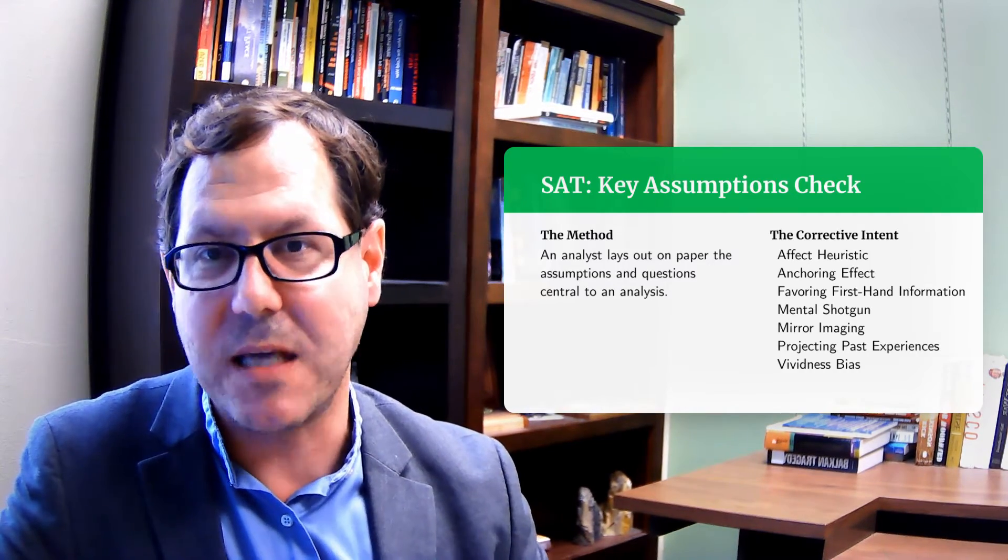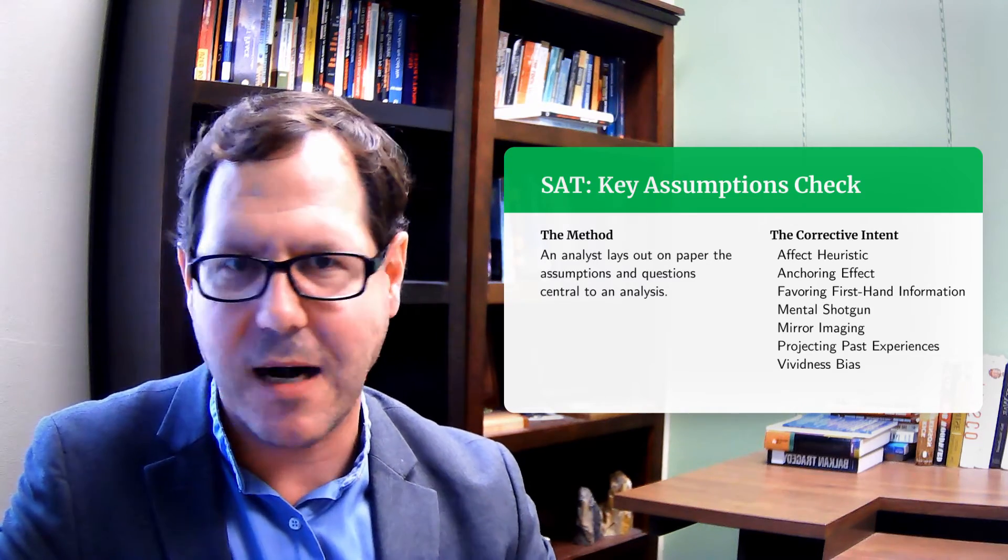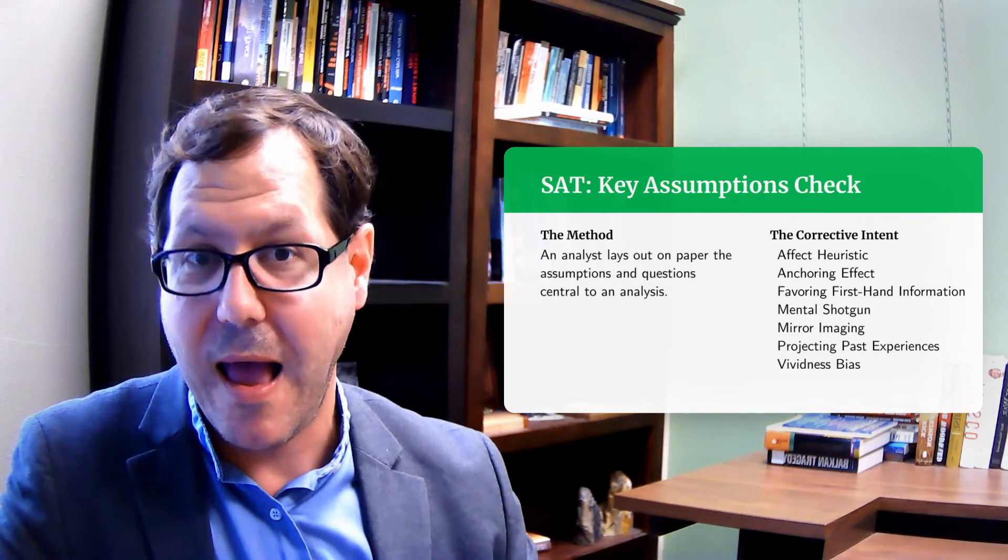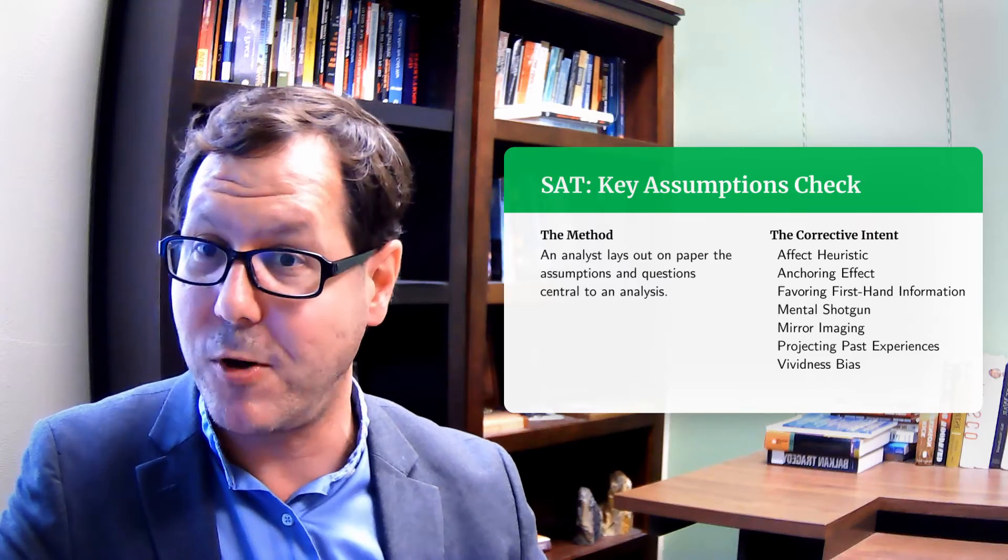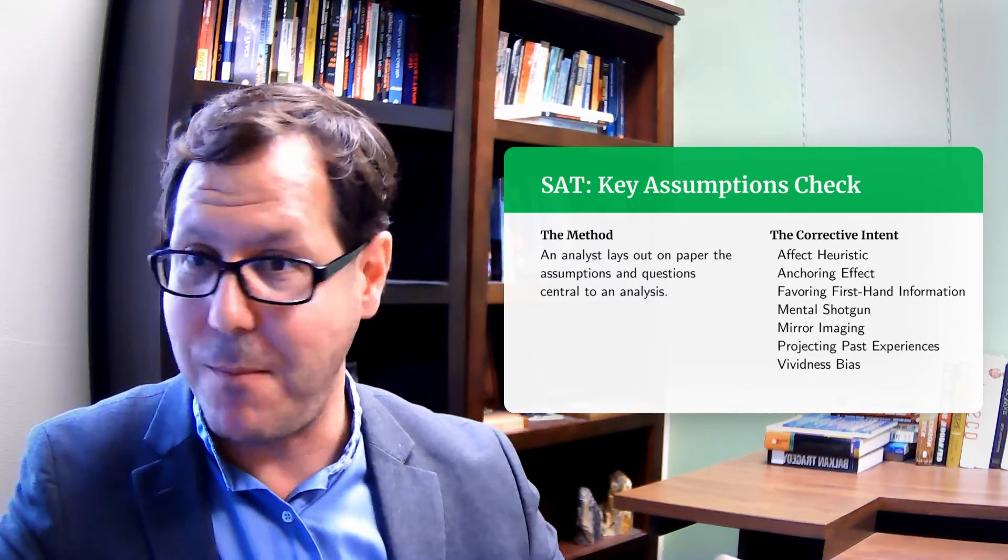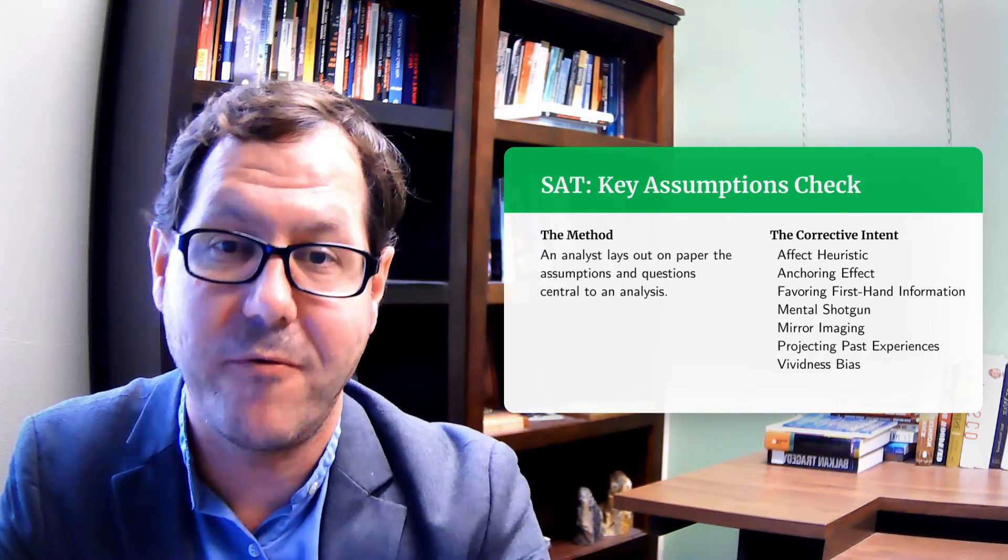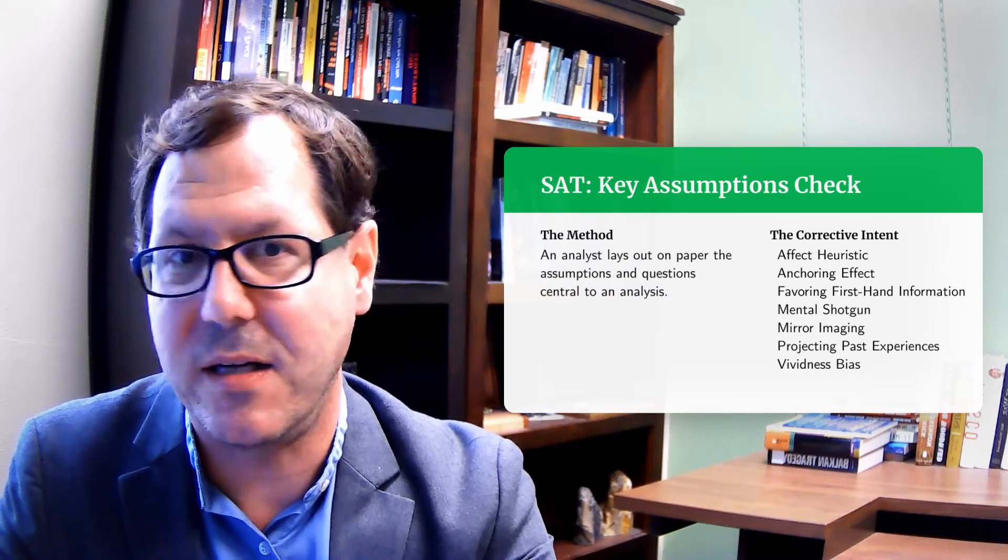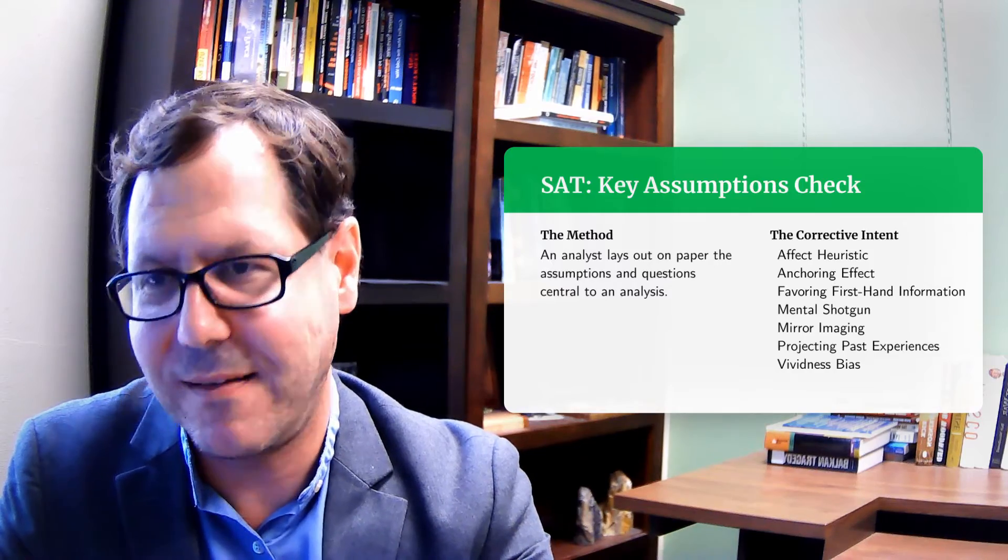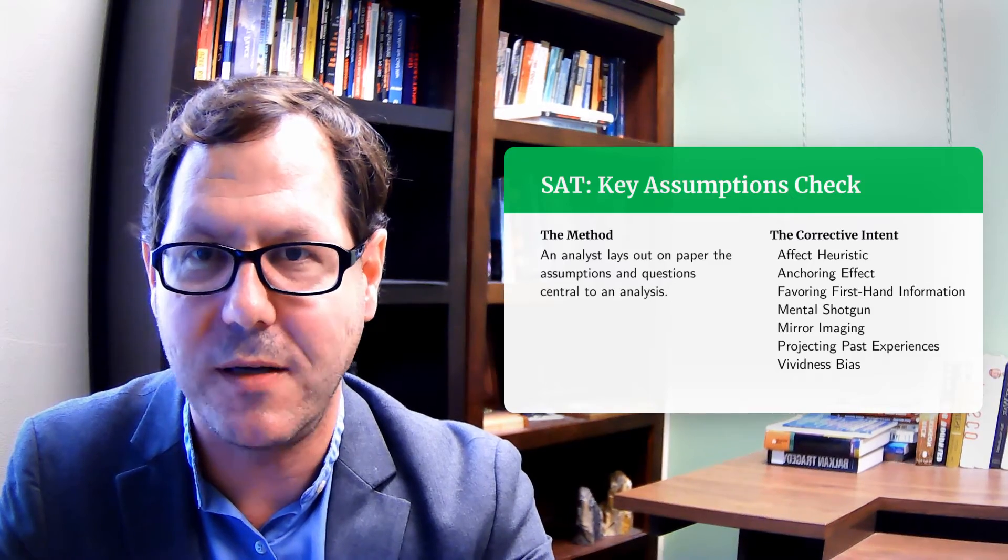We have the key assumption check where you write down the things you believe that are not coming from the data - assumptions you're bringing to the table. Make those public so other people can scrutinize them. Realize you're putting information together because of those assumptions, not because of what the information says. That can help with mirror imaging, mental shotgun approach, vividness bias - a lot of things can be mitigated by writing out our assumptions.